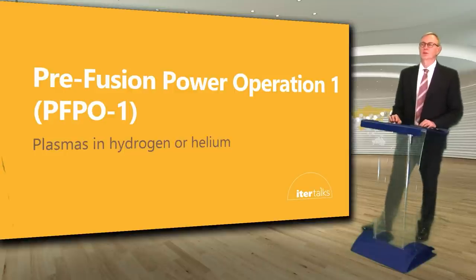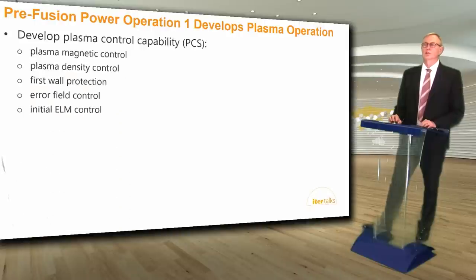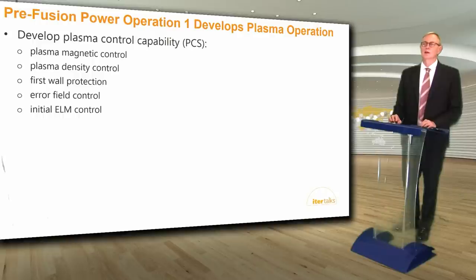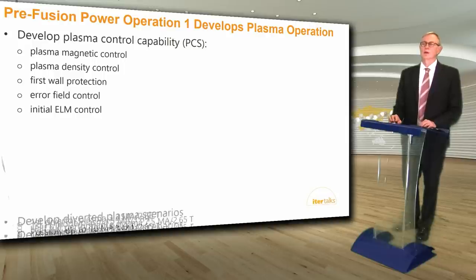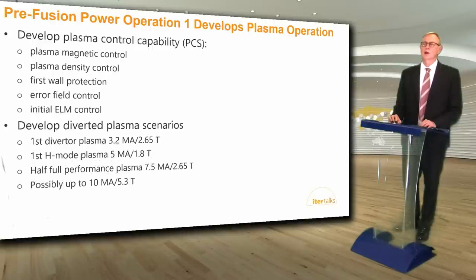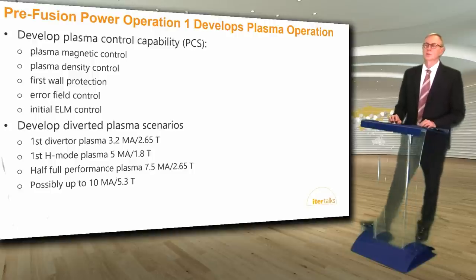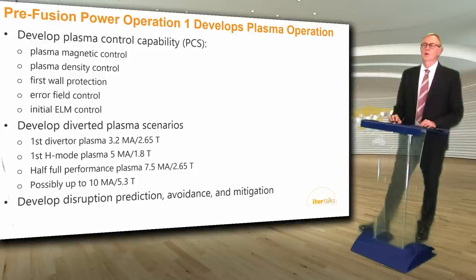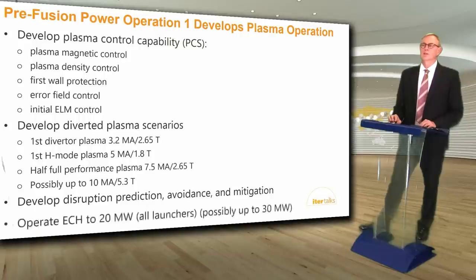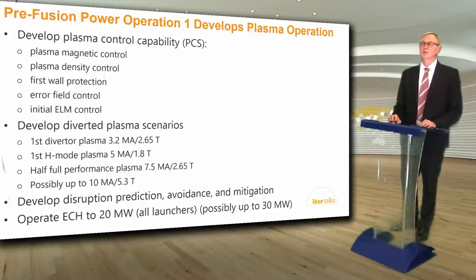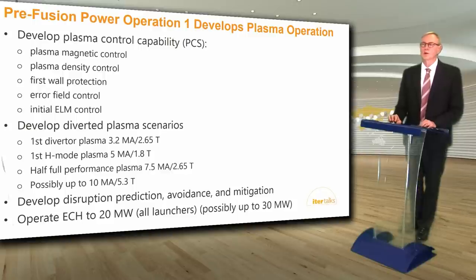We will then begin pre-fusion power operation one (PFPO1) with plasmas in hydrogen or helium to avoid fusion reactions. The main elements include determining plasma control capability — magnetic control, density control, first wall protection, fuel control, and initial ELM control — and developing diverted plasma scenarios including the first diverter plasma, the first H-mode plasma, half full performance plasma, and possibly increasing plasma current and toroidal field up to 10 megamps and 5.3 tesla. We will also operate the electron cyclotron heating system up to 20 megawatts in all launchers, with a possible upgrade to 30 megawatts if approved.